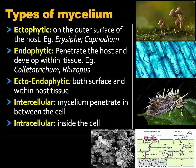Ecto-endophytic mycelium is another type produced by many fungi. As the name suggests, this type of mycelium is generally present both on the surface as well as within the host tissue. Intercellular mycelium is also another type, which penetrates in between the host cells. This is followed by intracellular mycelium, which is generally present inside the host cell.